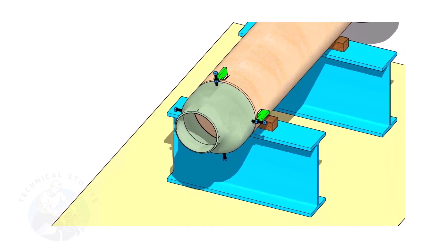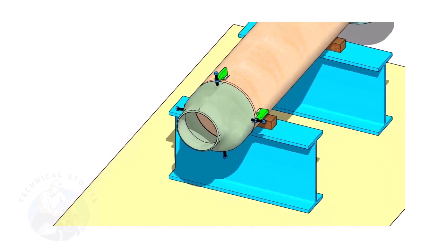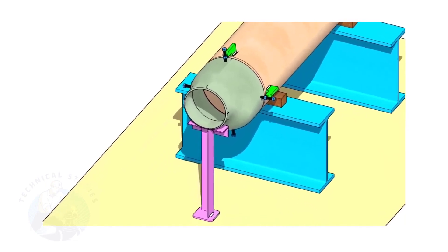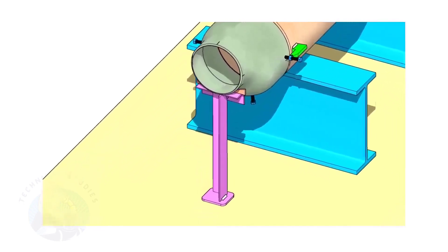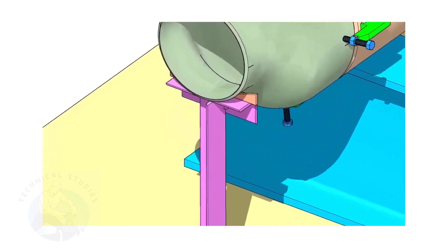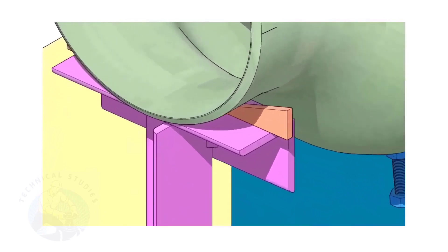Put the reducer in the clamps. Slightly tighten the bolts. Arrange proper supports below the reducer. The height of the support shall be adjustable. Here, I used simple wedges.